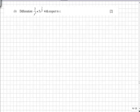In part B we're asked to differentiate 2 over x cubed plus 5x to 2 thirds. First we need to get it in a form that we can differentiate. 2 over x cubed is 2x to the minus 3 plus 5x to the 2 thirds.